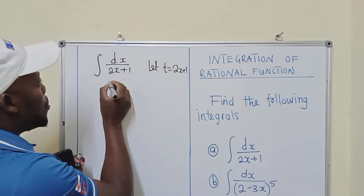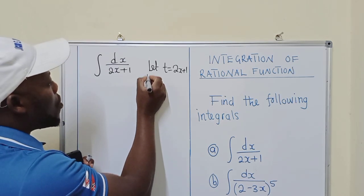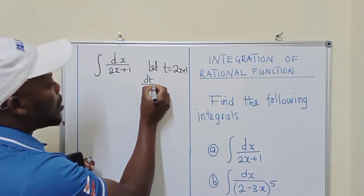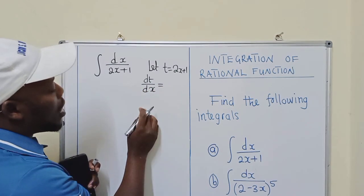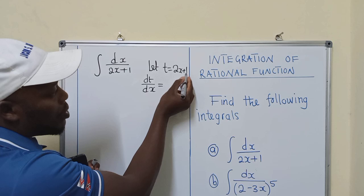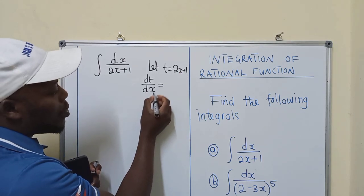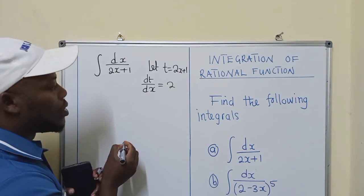After you've done so, you now find what we call dt/dx. In other words, you find the derivative of this with respect to x, of which it's just a 2.